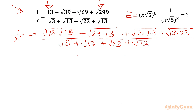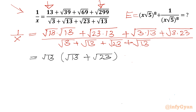Now I can see from the first two terms I can take √13 common, so I will take out √13. It will leave in the bracket (√13 + √23). From the last two terms I will take √3 common, so in the bracket we get (√13 + √23) — the same bracket.